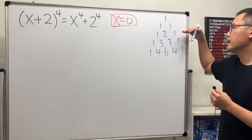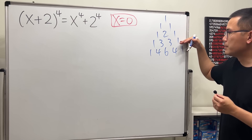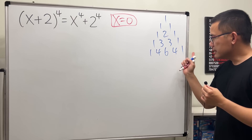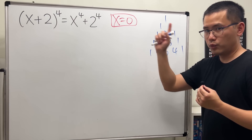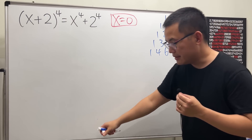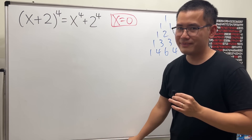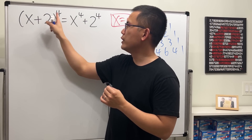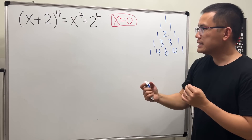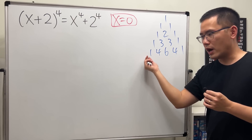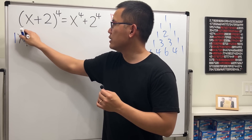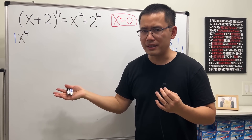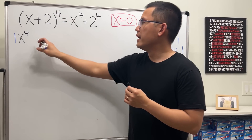The next rows correspond to the first, second, third, and fourth powers. The fourth row is what we want — these numbers are the coefficients, and this is called the binomial theorem. For (x+2) to the fourth power, the first term is x to the fourth power with coefficient 1.